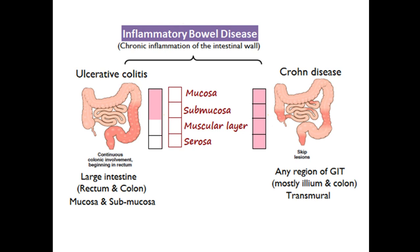The intestine consists of four major layers. Starting from the inside: the mucosa, then the submucosa, then the muscular layer which consists of inner circular and outer longitudinal layers, and the outermost layer formed by the peritoneum, which is the serosa. In ulcerative colitis, only the mucosa and submucosa are inflamed and involved.